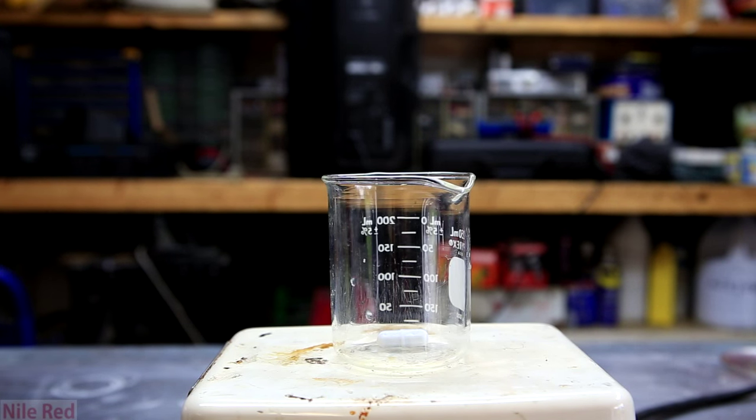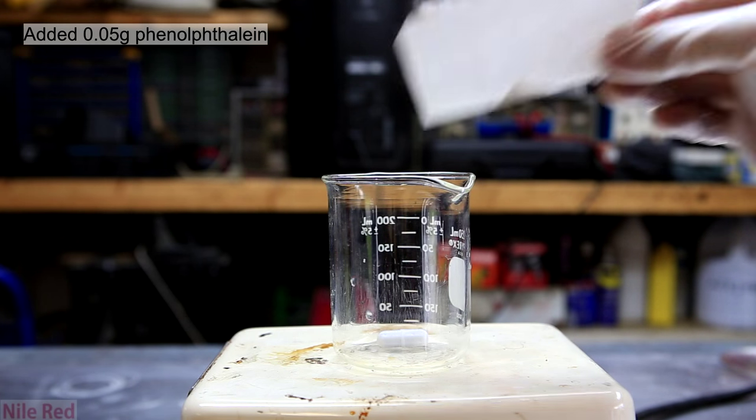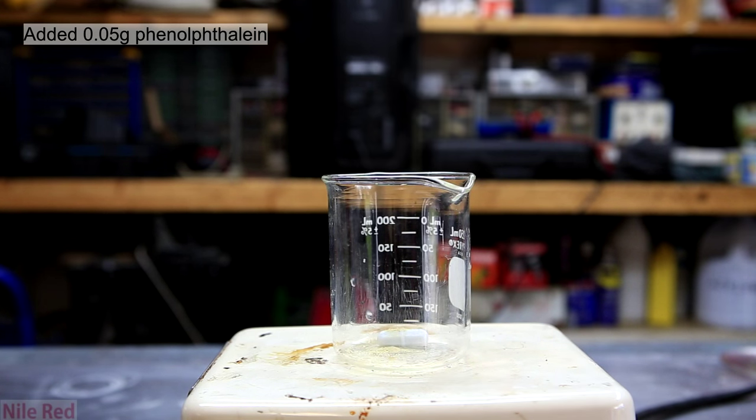This is just a quick video showing how to make a phenolphthalein indicator solution. 0.05 grams of phenolphthalein, which we made in a previous video, is added to a beaker.